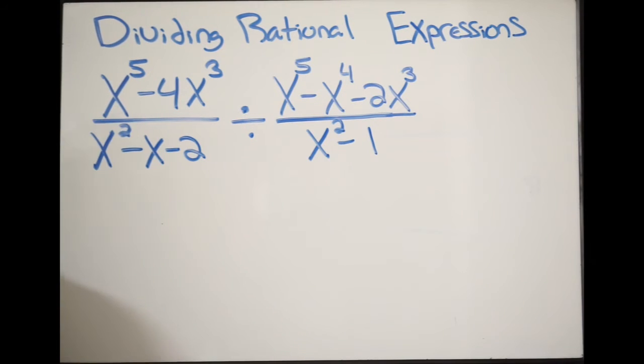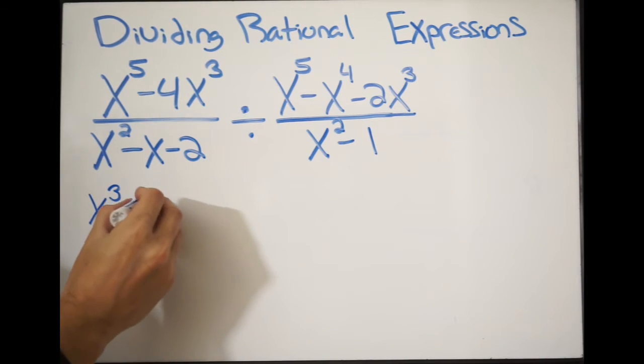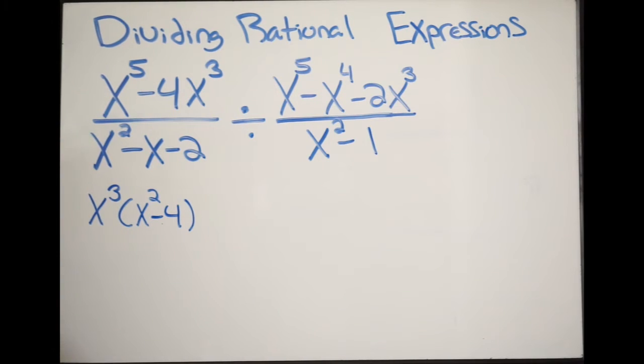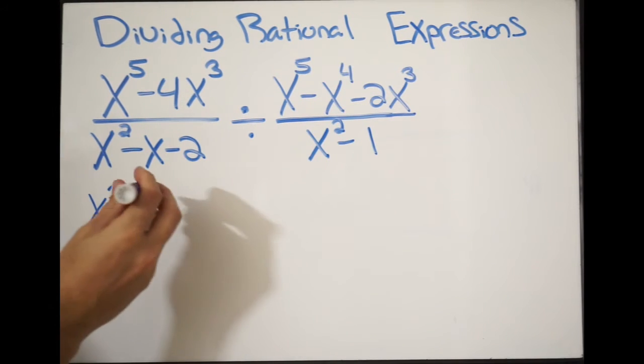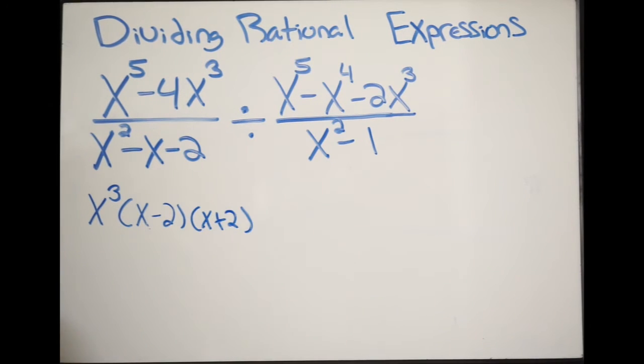Looking right here, I can pull out a greatest common factor of x to the third power. I'll have x to the third power, and then in parentheses, x squared minus 4. I can even go further with this because this is a difference of two squares. So x squared minus 4 factors as x minus 2 times x plus 2.